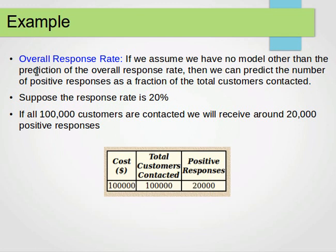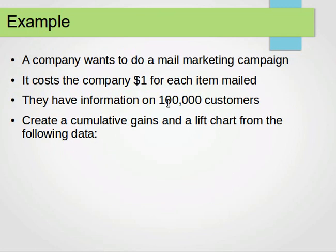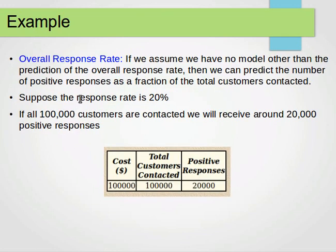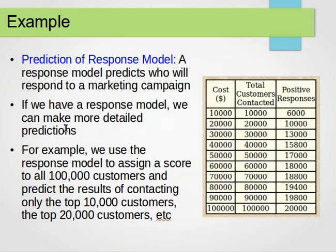For the overall response rate, let's assume we have no model other than the prediction of the overall response rate. We can predict the number of positive responses as a fraction of the total customers contacted. We have 100,000 customers and the response rate is 20%, so if we contact all 100,000 customers we get positive responses from 20,000 customers — meaning they are willing to buy the product.